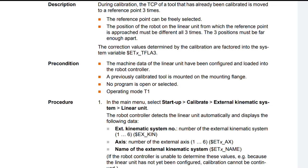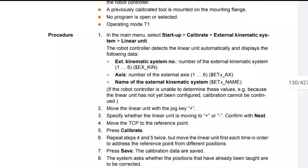Name of the external kinematic system, SET_NAME. If the robot controller is unable to determine these values because the linear unit has not yet been configured, calibration cannot be continued.